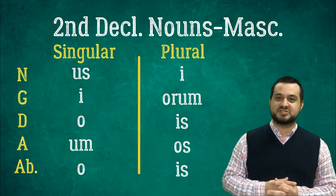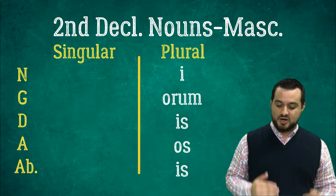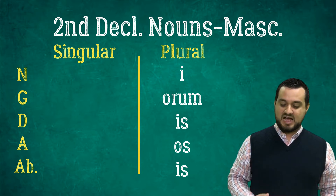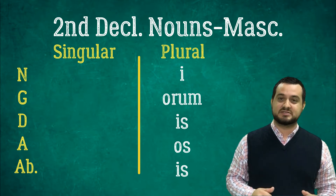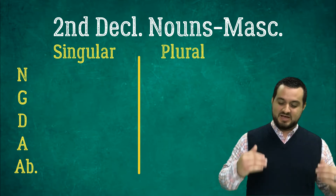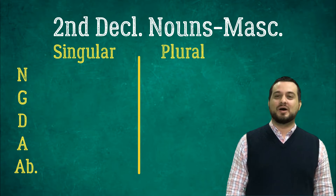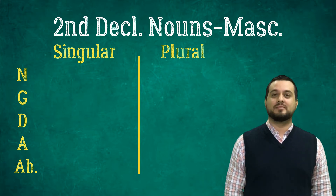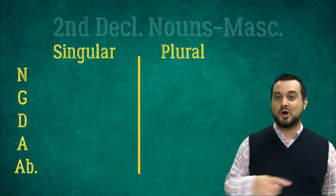Now let's do it with the disappearing line game. Ready? Us, I, O, Um, O. I, Arum, Is, Os, Is. Now let's take them all away: Us, I, O, Um, O. I, Arum, Is, Os, Is. I hope you guys did well.